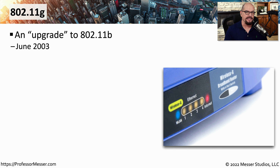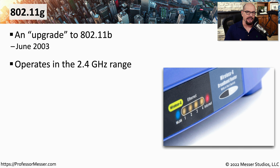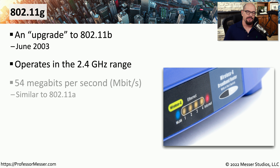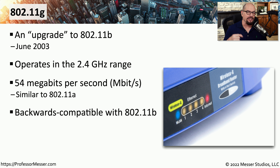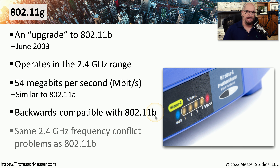One of the first upgrades available to 802.11b networks was the 802.11g standard, released in the June 2003 timeframe. Just like 802.11b, 802.11g also operates in the 2.4 gigahertz range, but the speed was increased to 54 megabits per second — about the same as 802.11a. The 802.11g standard is backwards compatible with B, meaning you could upgrade your access point to G and still use B devices on the same network. It still suffers from the same 2.4 gigahertz frequency conflicts as 802.11b.